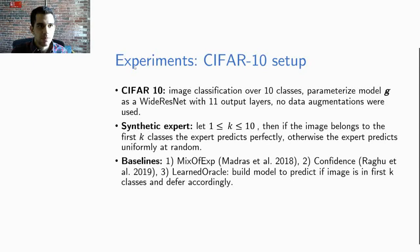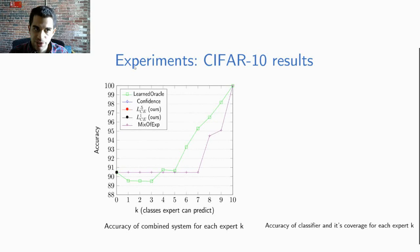So on the left we are showing a plot of combined system accuracy on the Y axis versus K the number of classes the expert can predict. So each point here corresponds to a particular expert K. As we can see the mixture of expert loss first fails to learn any behavior for up to K equal to 7. It learns to never defer to the expert. The learned oracle performs a bit better on higher K but fails initially.